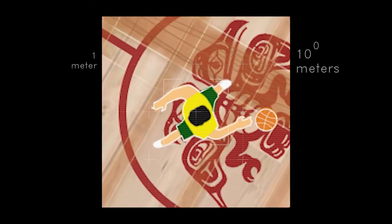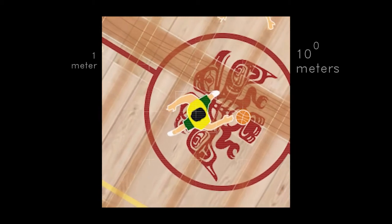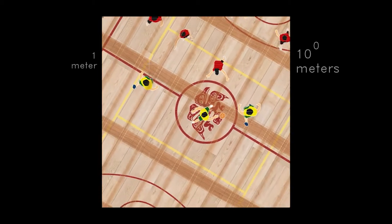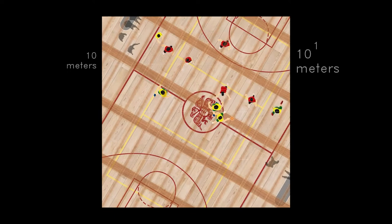This square is 10 meters wide, and in 10 seconds, the next square will be 10 times as wide. Our picture will center on the basketball players, even after they've been lost to sight.